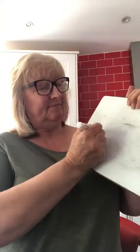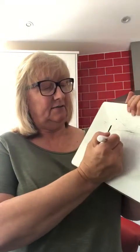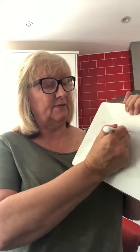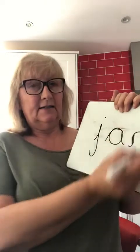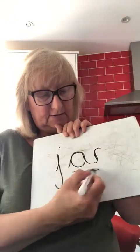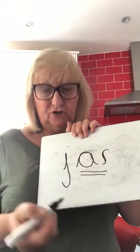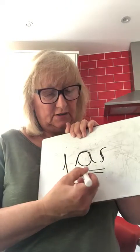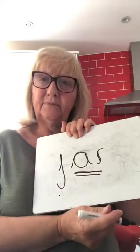Pause the video. Sorry about that - pause the video. Use your Fred fingers: jar. Oh, two Fred fingers - jar, jar. Let's write it: j, then we've got our special friends. Let's check that we've written 'jar': j, r - jar.